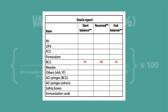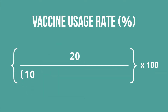Take the number of doses you had in stock at the start of the month — 10, or one vial of BCG — and add the number of doses received during the month, 40. Then subtract the number of doses you have in stock at the end of the month, 10 doses. Your denominator total would be 10 plus 40 minus 10, or 40.